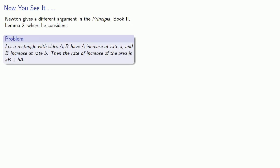Now Newton gives a slightly different argument in the Principia, Book 2, Lemma 2, where he considers the following problem. Let a rectangle with sides a and b have a increase at rate a and b increase at rate b. Then the rate of increase of the area is ab plus ba.